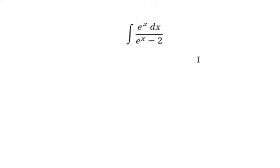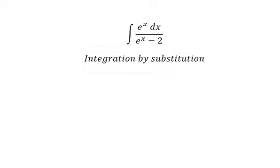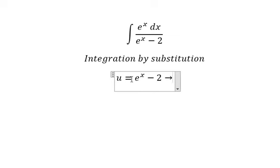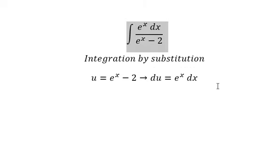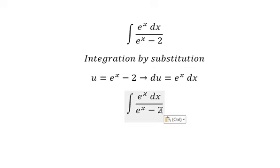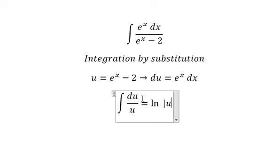Now let's go to the last one. We use integration by substitution, setting u equal to eˣ minus 2. Taking the first derivative of both sides, we get eˣ dx. This term changes to u, this term changes to du, and we have the final answer.